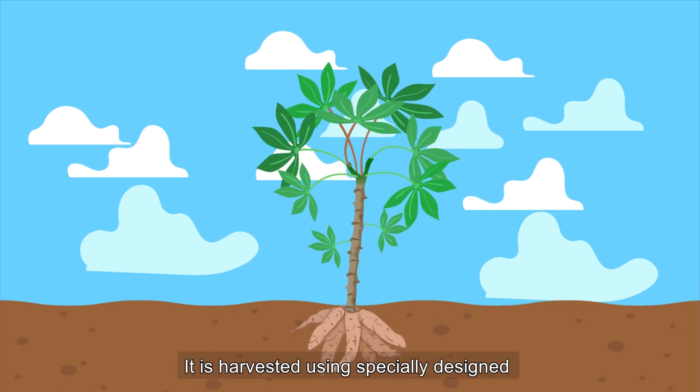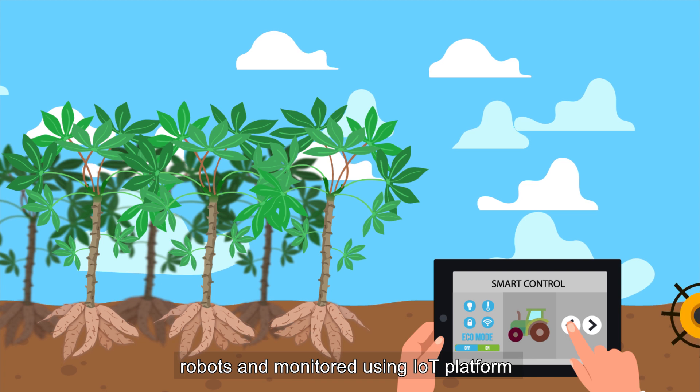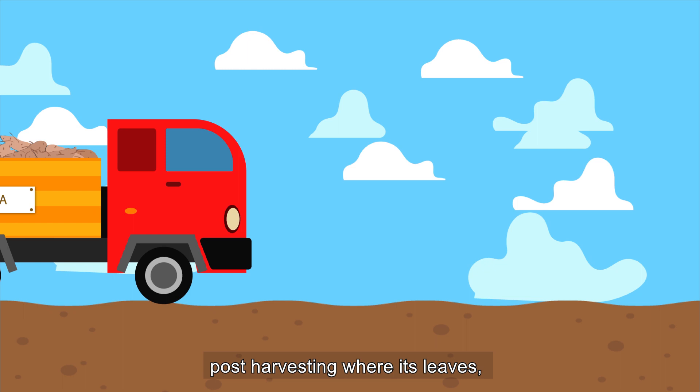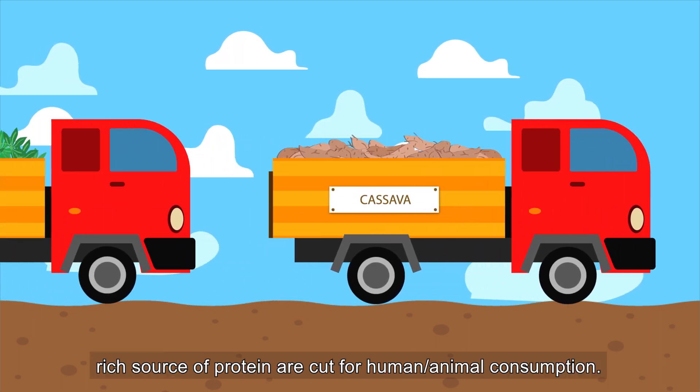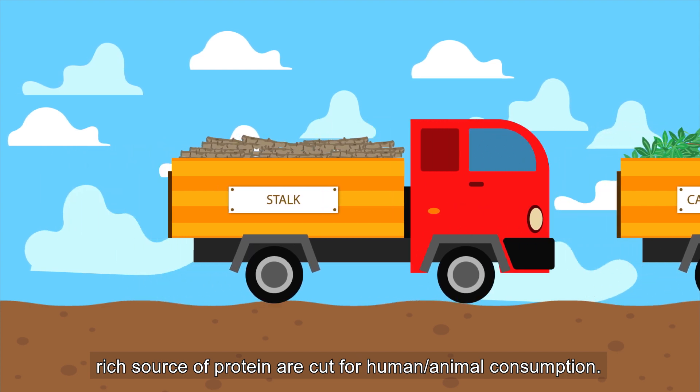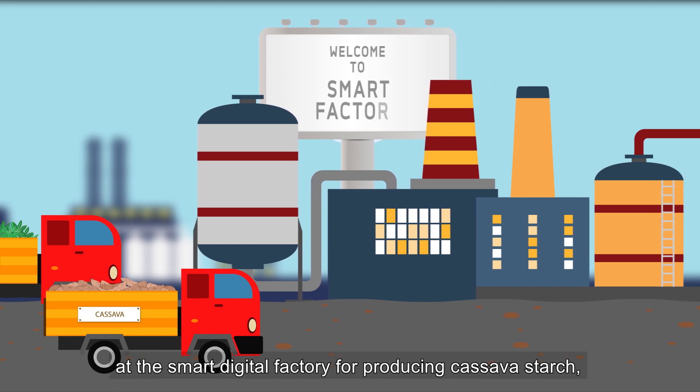It is harvested using specially designed robots and monitored using IoT platform throughout its growth, followed by post-harvesting waste leaves which are a source of protein and are cut for human and animal consumption. The underground cassava is then processed at the smart digital factory.